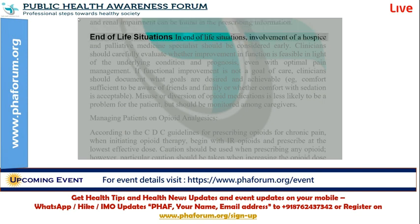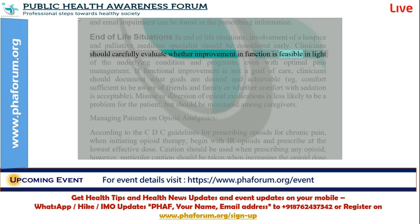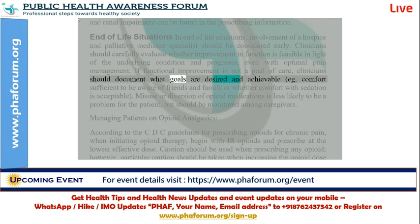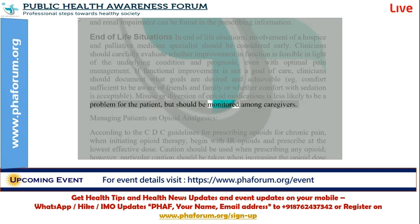End-of-life situations: involvement of a hospice and palliative medicine specialist should be considered early. Clinicians should carefully evaluate whether improvement in function is feasible in light of the underlying condition and prognosis, even with optimal pain management. If functional improvement is not a goal of care, clinicians should document what goals are desired and achievable — for example, comfort sufficient to be aware of friends and family, or whether comfort with sedation is acceptable. Misuse or diversion of opioid medications is less likely to be a problem for the patient, but should be monitored among caregivers.